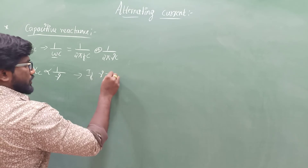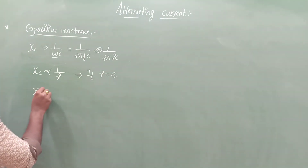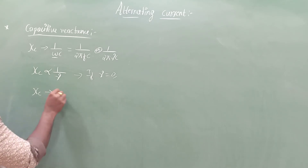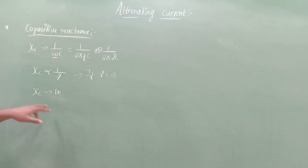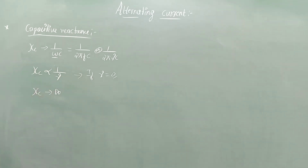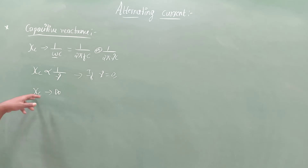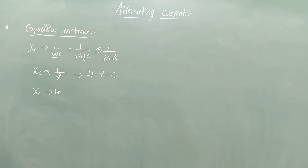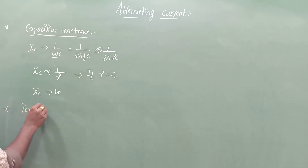If the value of frequency ν is zero, then XC is infinity — infinite opposition. In other words, the capacitor blocks DC. If the frequency of the AC circuit is zero, it blocks DC. That is why capacitive reactance becomes infinite: it produces more opposition to the flow of current.